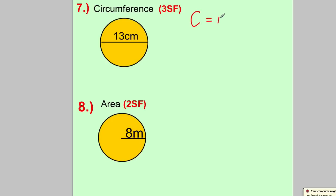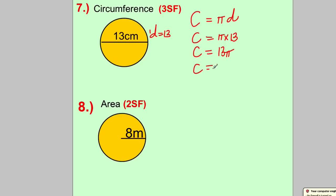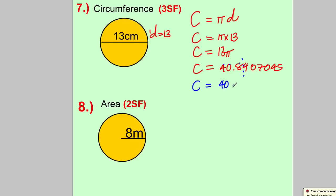Next is circumference and area of a circle. Remember the mnemonic: cherry pies are delicious — C = π × D. We're told D = 13, so the circumference equals π × 13 = 13π. On the calculator, 13 × π gives 13π, then press SD to get the full decimal: 40.84070459... We want three significant figures — coming from the left, the first, second, third — the digit after is 4, so it stays the same. The answer is 40.8 cm.